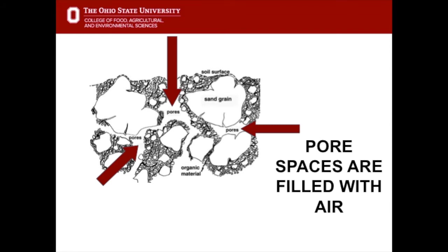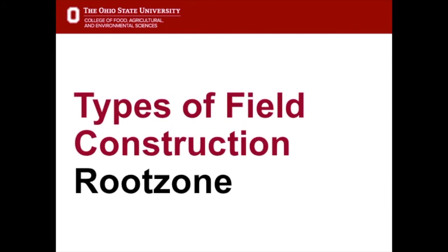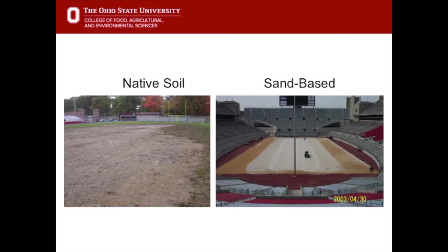There are two types of field construction in sports field management, and we call them root zones. The soil that the turf grasses grow in we call root zone. There's a native soil root zone, which is the indigenous soil of the area, and then we have man-made, sand-based root zones.